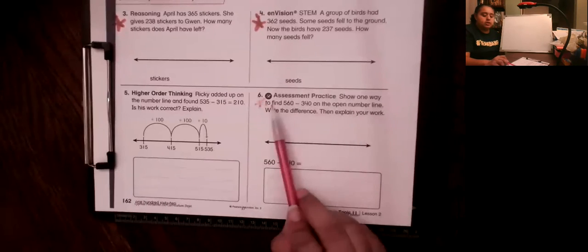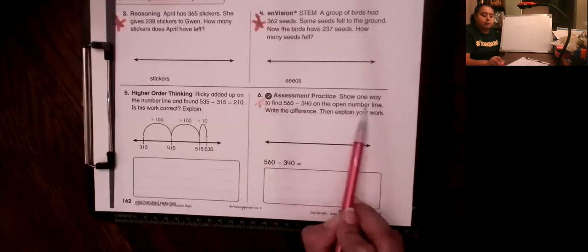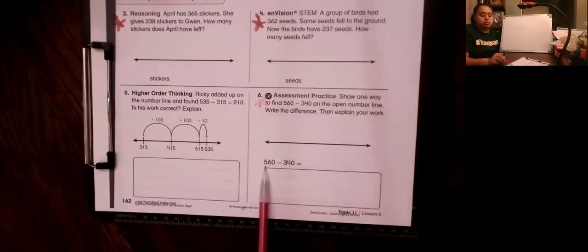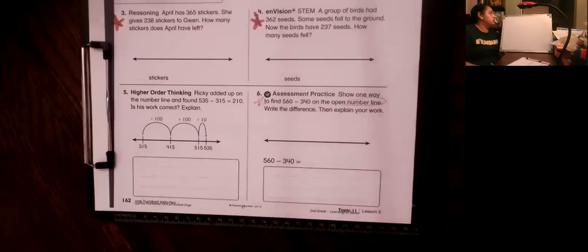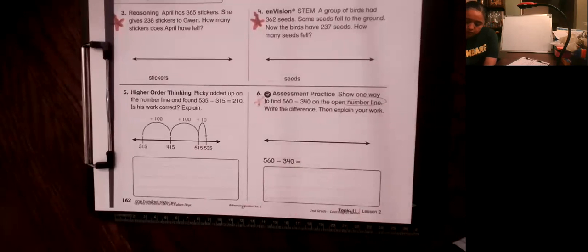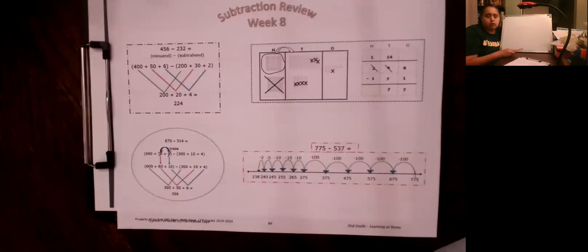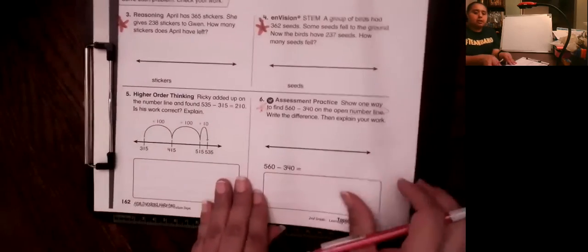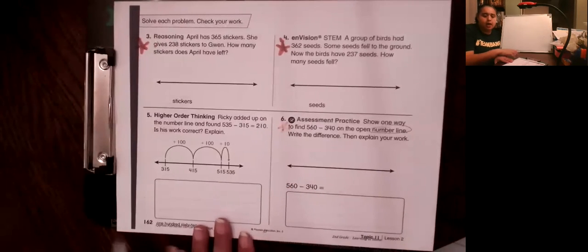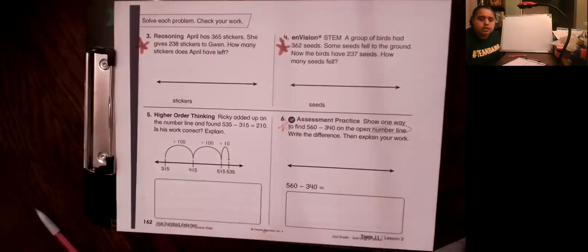Number six asks you to show one way to find 560 minus 340 on the open number line, write the difference, and explain your work. If you know the number line use it, but you can solve it any way we learned. You can always go back to the anchor chart or look at my lessons. Remember to take a picture of pages 57 and 58 plus your window pane work on a separate sheet. Hope you do well on your math lesson this week!